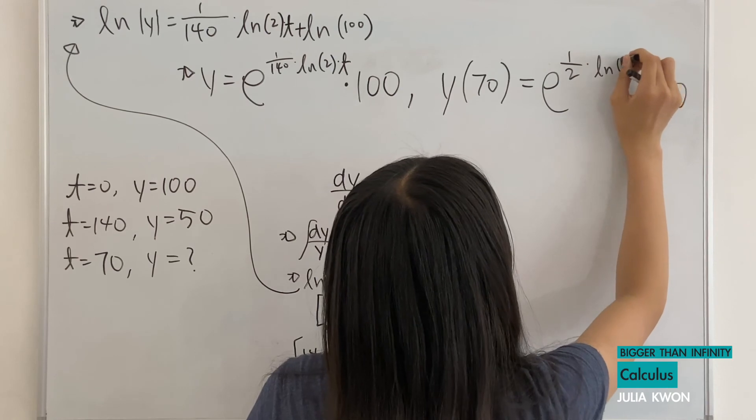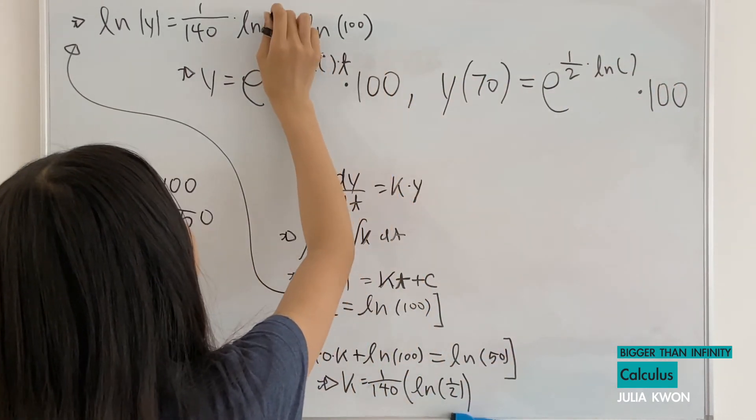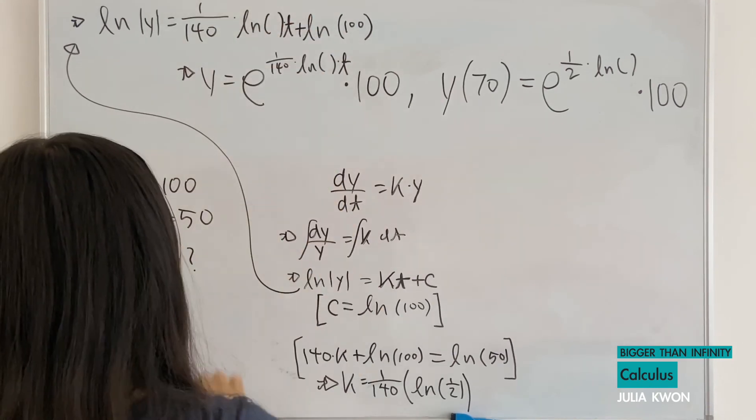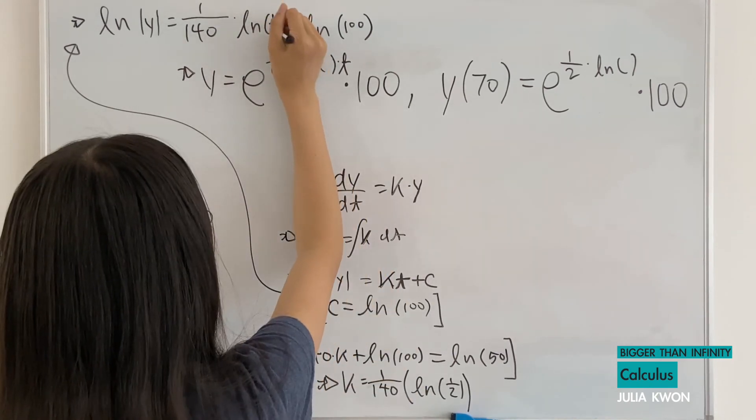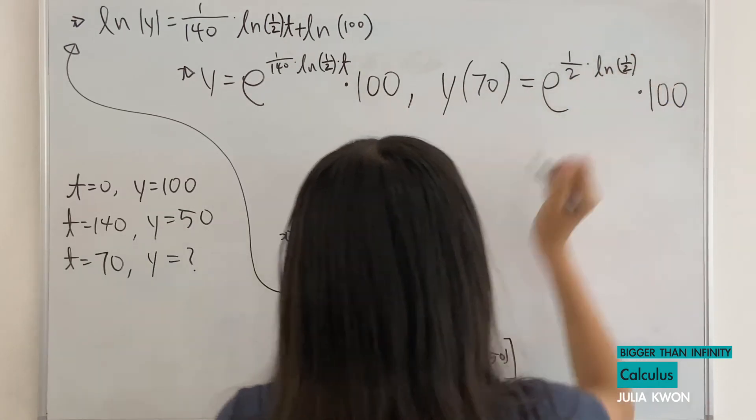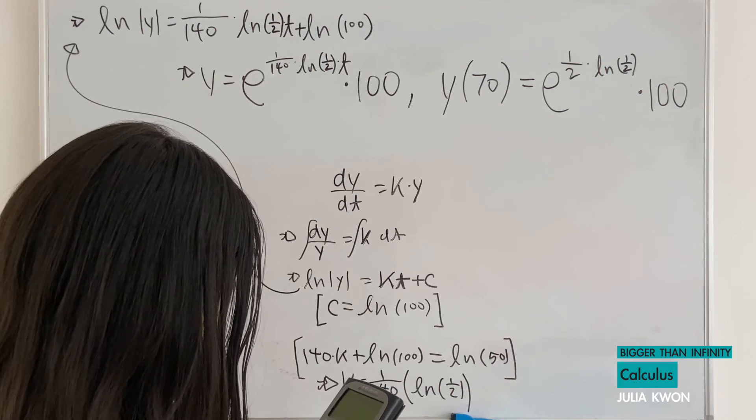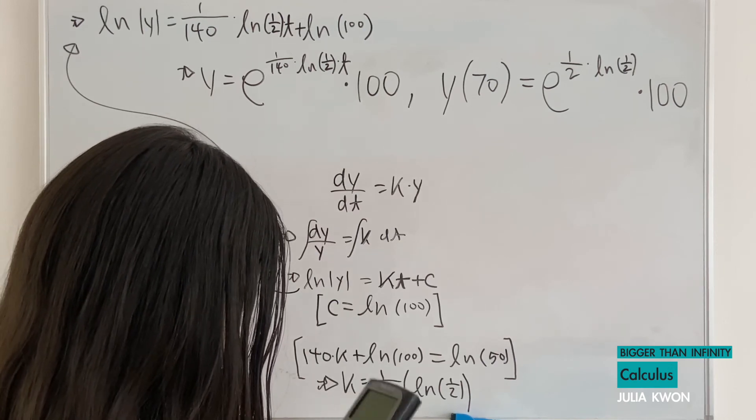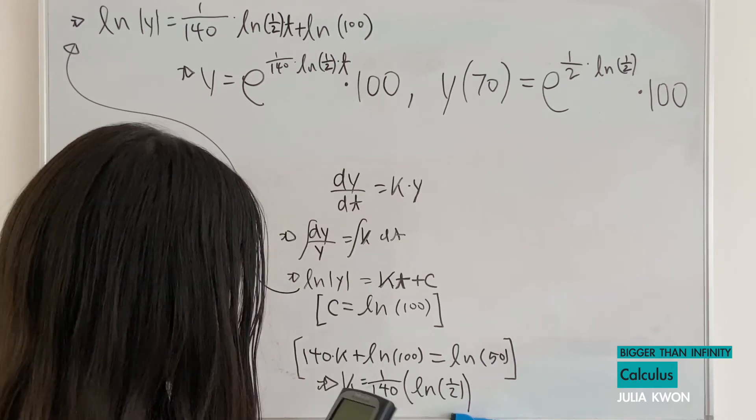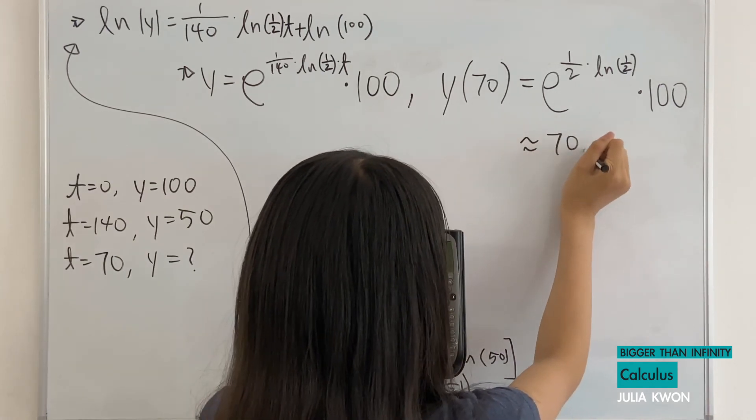So I'll just change everything. 1 over 2, 1 over 2, 1 over 2, and 1 over 2. And so if you put in 1 over 2 instead, that would be 0.5, you will get approximately equal to 70.71.